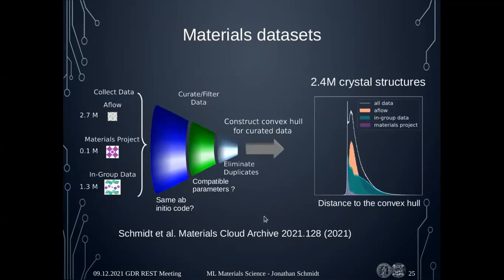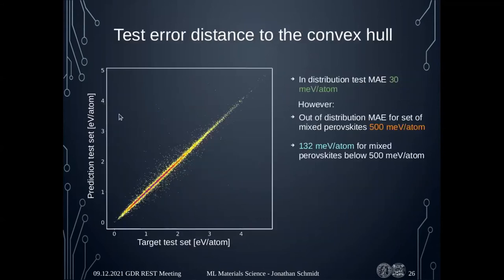For large networks, we also need large datasets. We combined data from various compatible databases — filtering, eliminating duplicates, and aligning parameters was quite annoying — to get a large compatible database. You can find this dataset, though for Materials Project or AFLOW you will only have the IDs to download from their database. Training on this large dataset, we achieved excellent test set predictions with errors better than chemical accuracy.